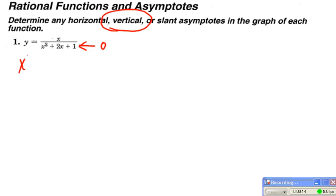So if I take my denominator, x squared plus 2x plus 1, and I set that equal to 0, I'm going to have to factor in order to solve this for x. So x times x, that'll give me my x squared term.